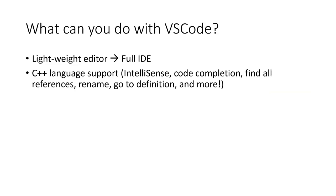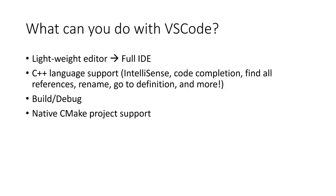VS Code has great C++ language support — it has IntelliSense, code completion, and a bunch of productivity features such as Find All References, Rename, Go to Definition, and more. You can build and debug your C++ projects in VS Code; it will find whichever compiler or debugger you have installed on your machine. We also have native CMake project support in VS Code, as we recently started maintaining the CMake Tools extension. CMake is one of the most popular build systems for C++ projects, especially for open source projects.